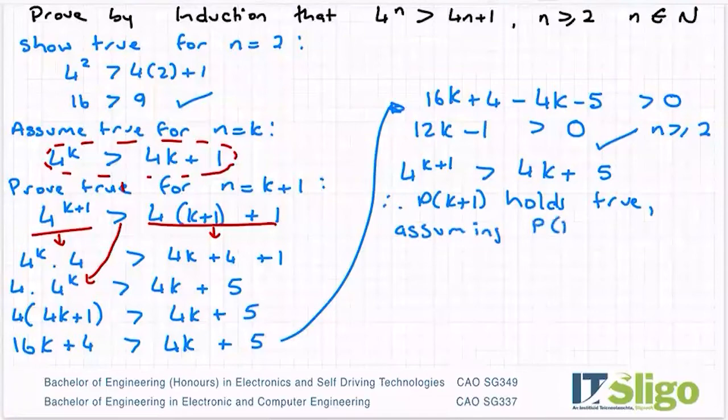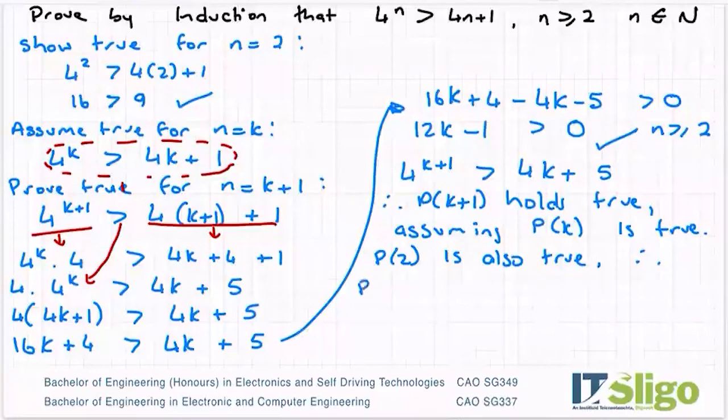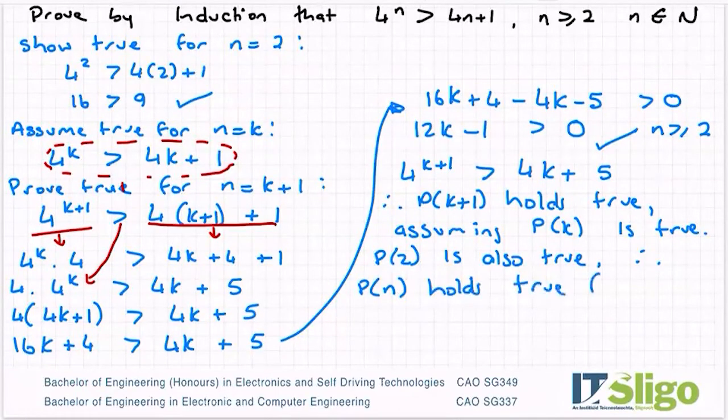Assuming p of k is true, p of 2 is also true. Therefore, p of n holds true for n is greater than or equal to 2, n is an element of the natural numbers.